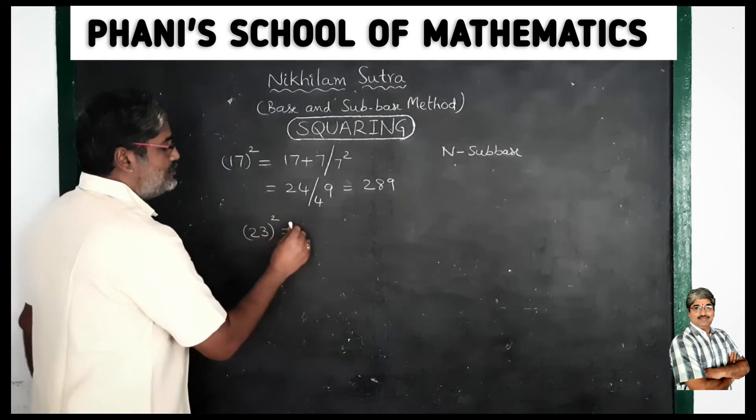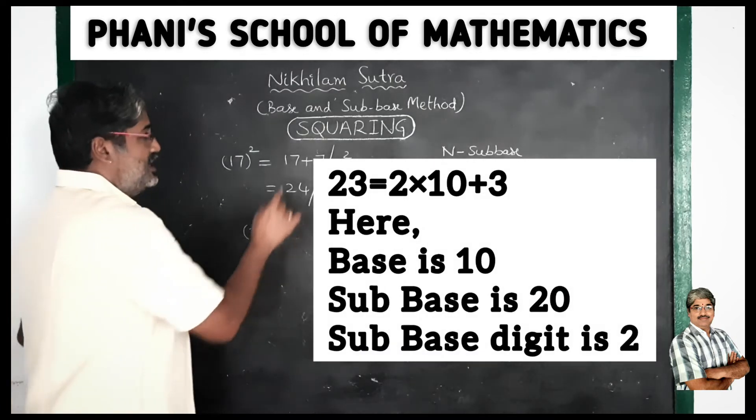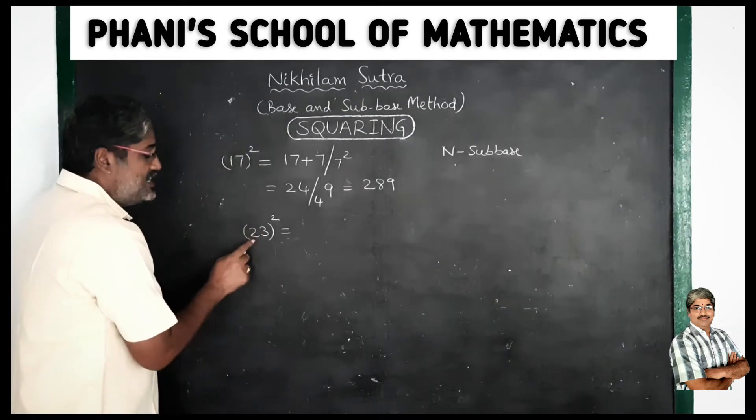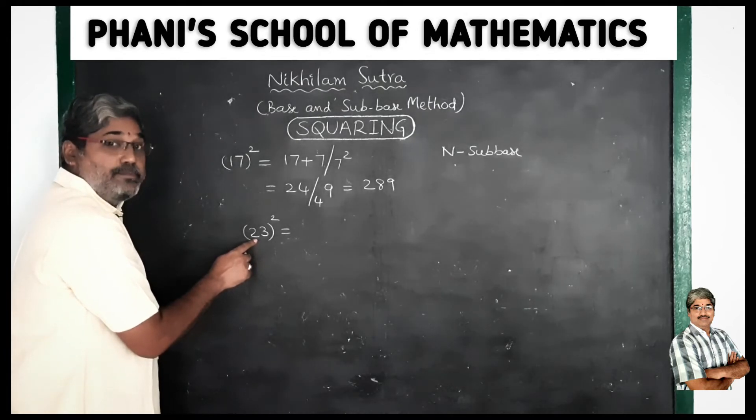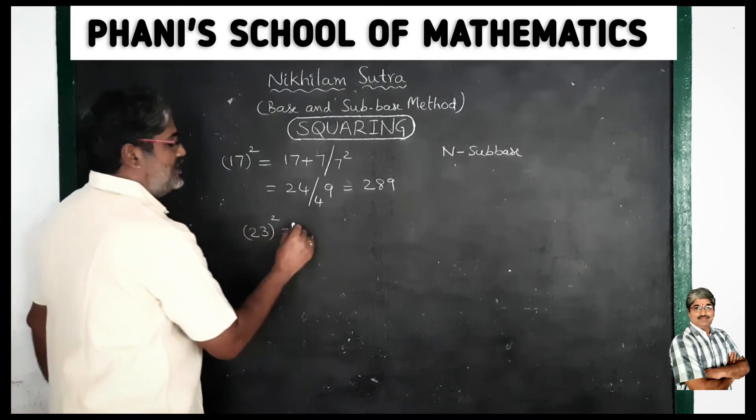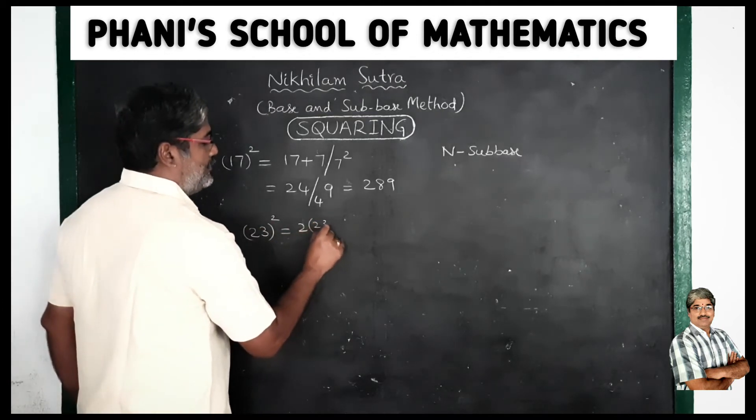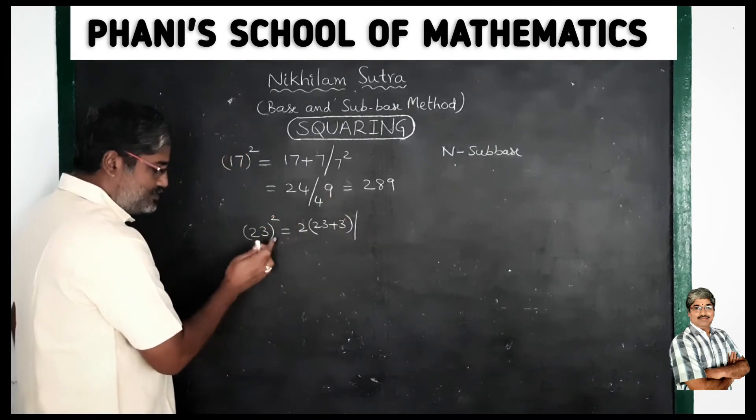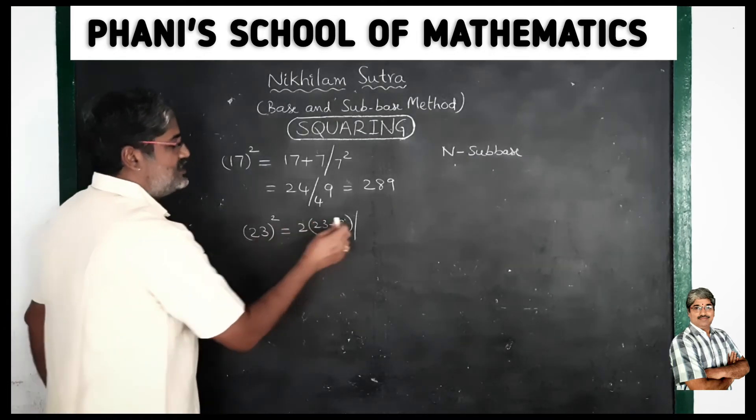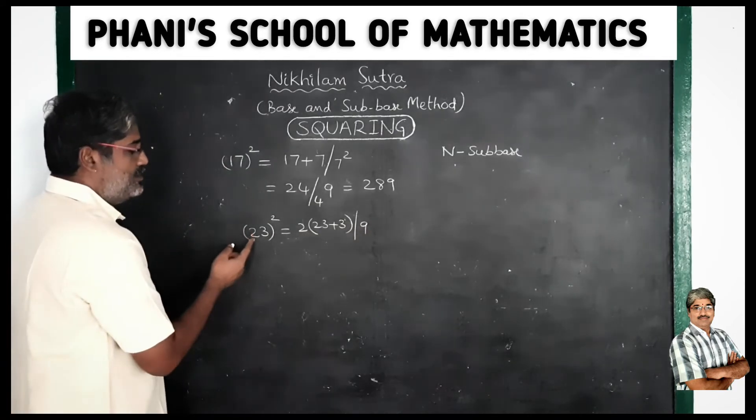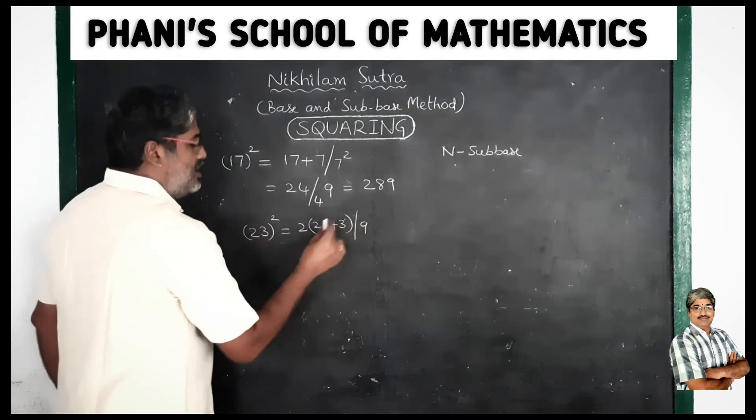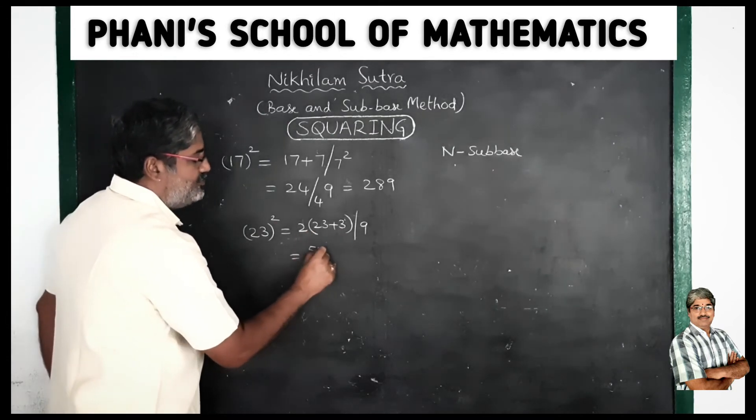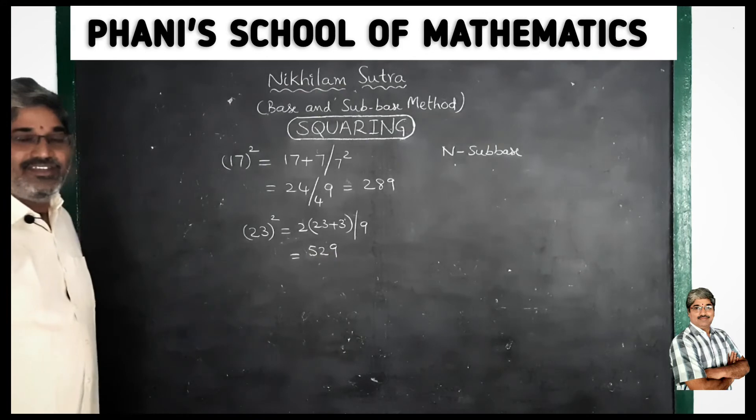Suppose 23 square. Okay, 23 square is equal to, so first, here this is a little, sub-base 20 and sub-base digit 2. Base 10 but sub-base 20. Sub-base digit 2, 2 multiply, 2 times 23 plus 3, number plus deviation. First part type, 2 times 23 plus 3. Next, 3 square there is 9. This is equal to 23 plus 3 is 26, 2 times 26 is 52 and 9. Finish, clear, in the easy go, next.